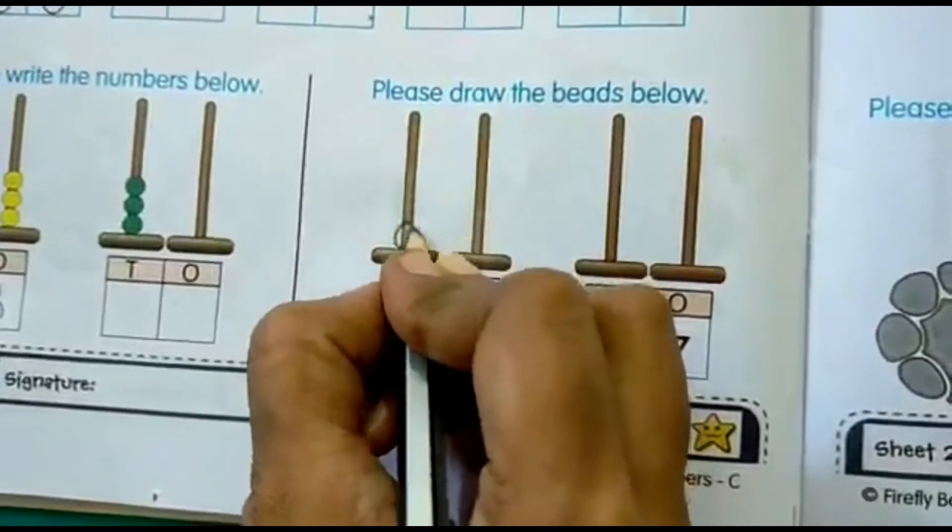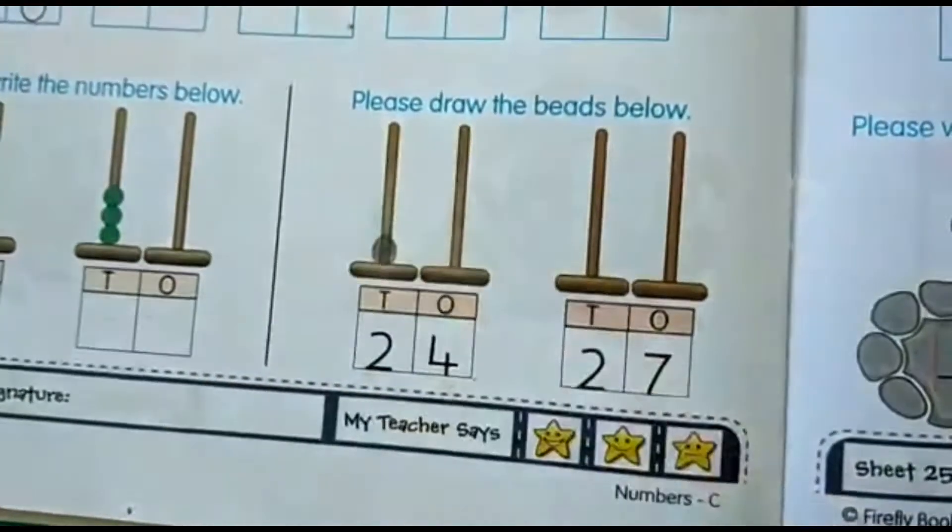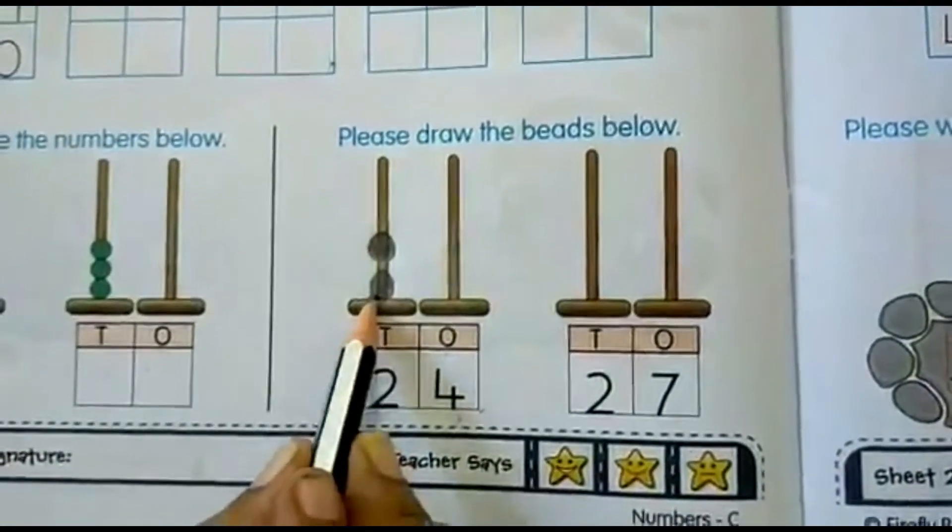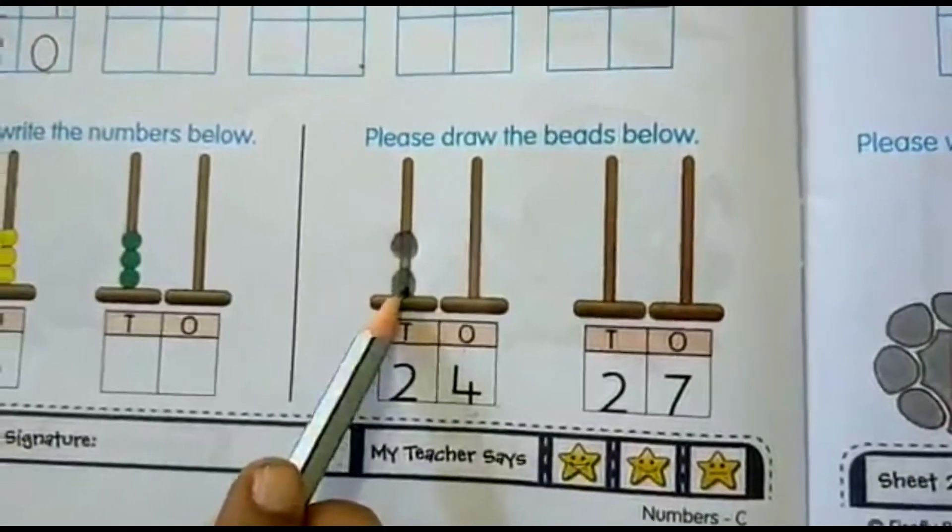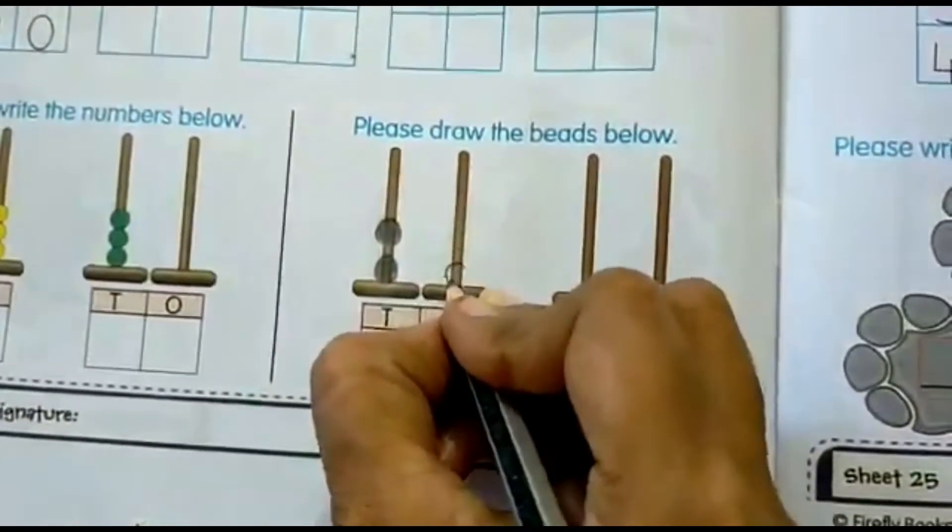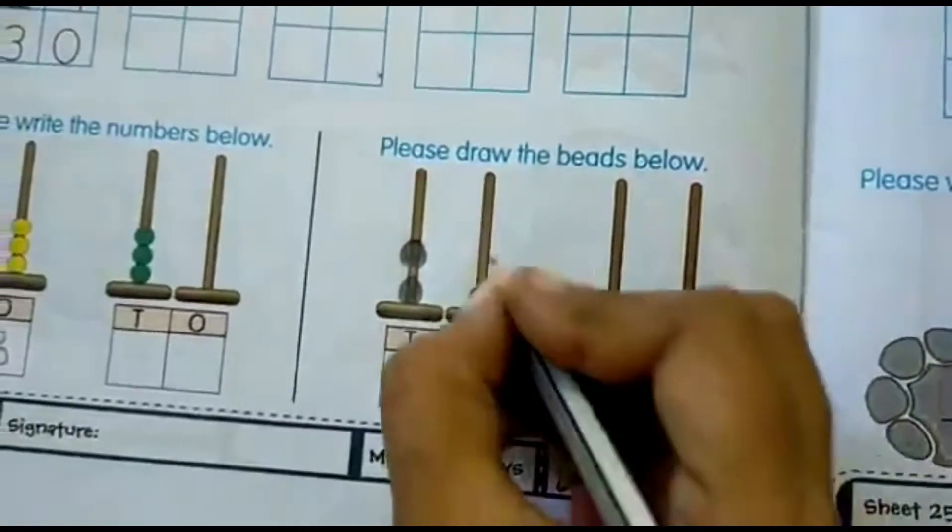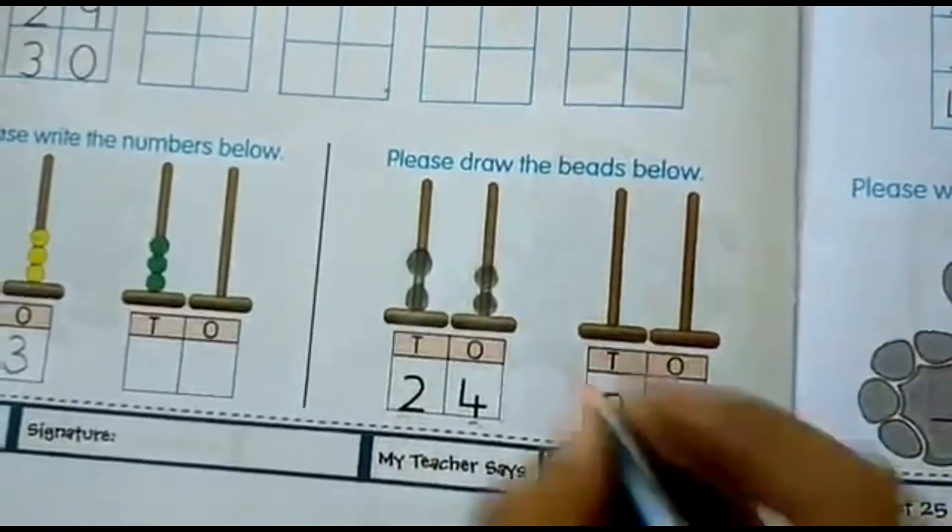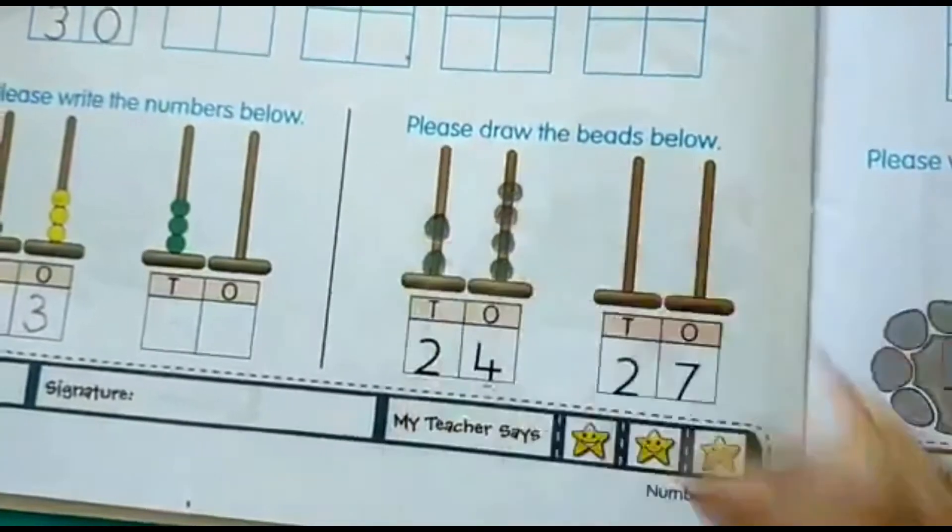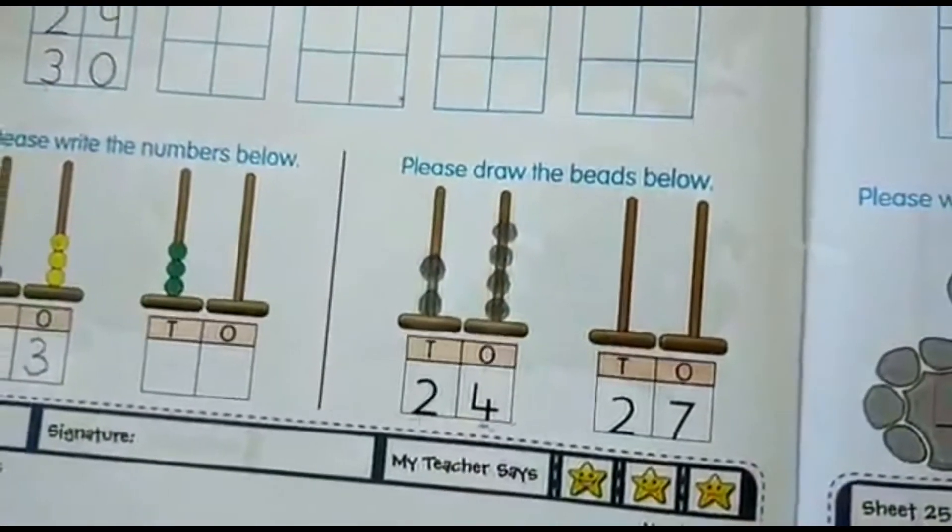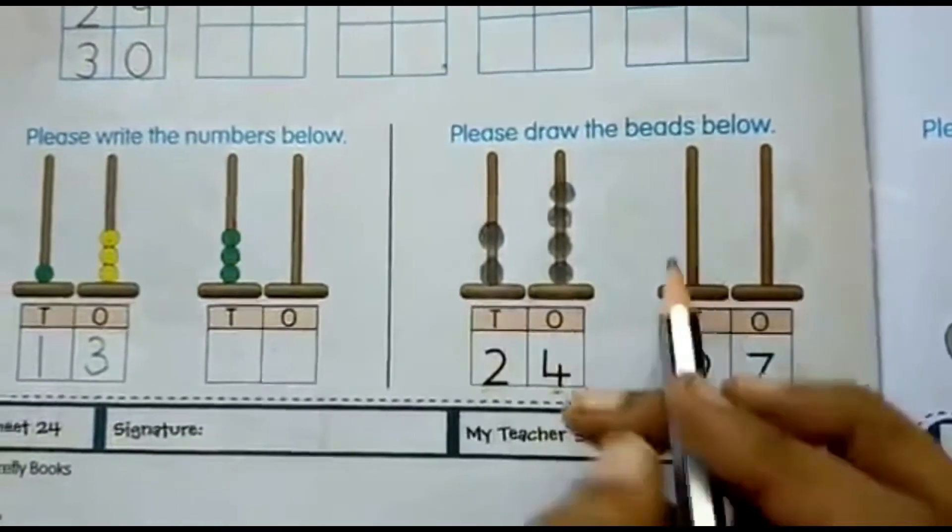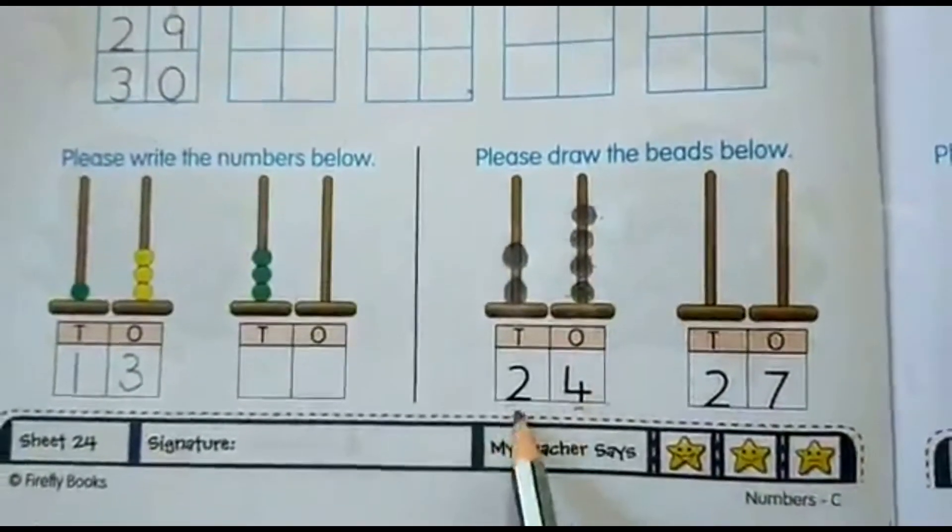So in the tens place, 2 beads. 1 bead, 2 beads. So in the tens place, how will we count it? 10, 20. And here, in the ones place, how many beads we have to draw? 4 beads. 1, 2, 3, 4. So 4 beads are drawn. So how will we read this number? In the tens place, this is read as 10, 20. 20, 21, 22, 23, 24. So we have 24 beads here.